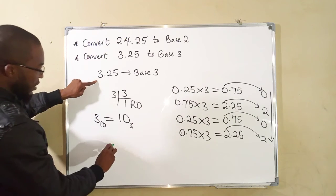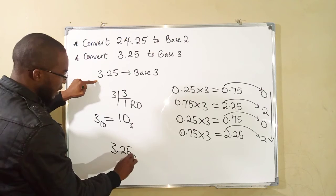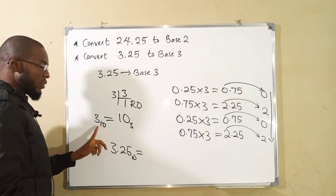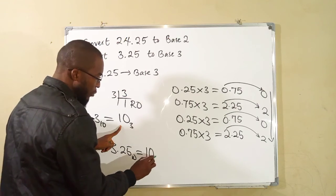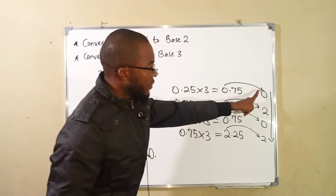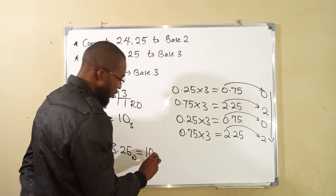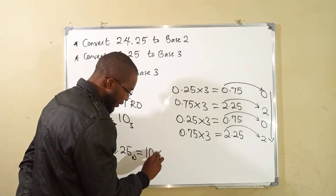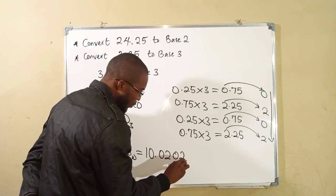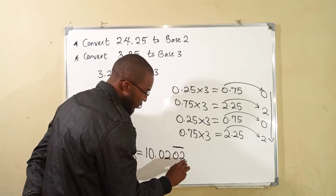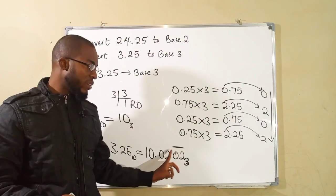And finally, this 3.25 in base 10 will be equal to, you start with the whole number part, which we obtain 10 point. We have 0, 2, 0, 2, 0, 2 continuously recurring. So we have 0, 2, 0, 2. This means that 0, 2 is recurring. It is recurring.